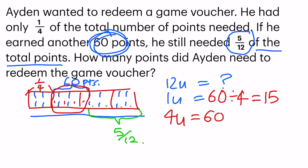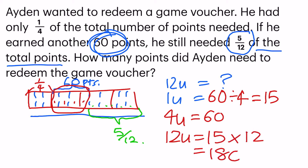So for the last part — how many points did Aidan need to redeem the game voucher? That is the entire thing, which is 12 units. To find out 12 units, I will take 15 times 12, which gives me 180 points. And that is the final answer.